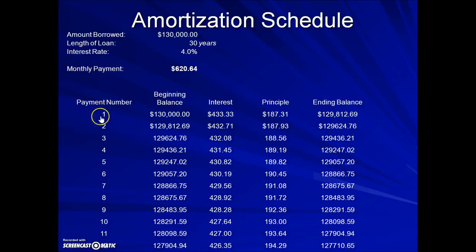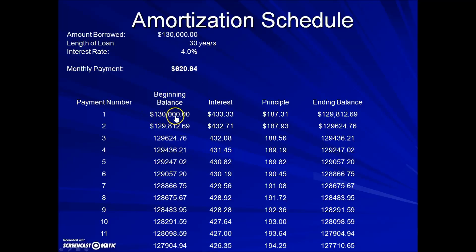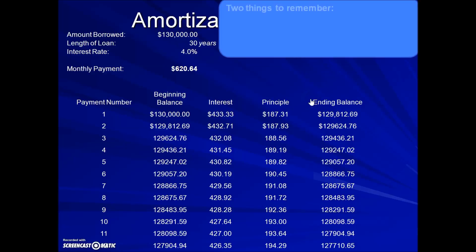An amortization schedule will always have the payment number — this is just showing the first year, but it would continue on for all 30 years. It will show the beginning balance, which was the amount borrowed, and the next columns show interest, principal, and then the ending balance.